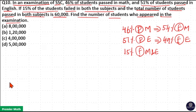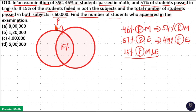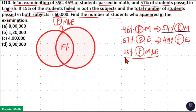Now we have the data of failed students, so let's draw the Venn diagram. The intersection represents the students who failed in both maths and English, that is 15% of students who failed in both subjects. Note that the 54% who failed in maths includes this 15% who failed in both maths and English.